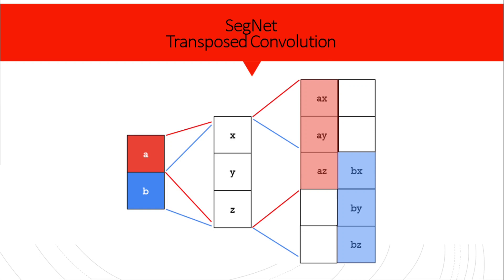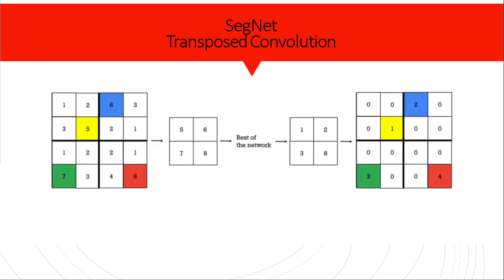SegNet has one additional detail worth mentioning: max unpooling. During the pooling process, maximum positions are saved. In max unpooling, elements from the new matrix are placed back at those previously remembered maximum positions — for example, values 1, 2, 3, and 4 are inserted at the same locations as the max values 5, 6, 7, and 8. The remaining cells receive a value of zero, essentially a zero-padding.